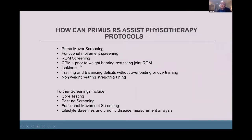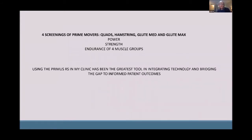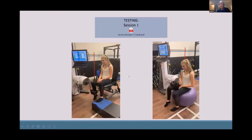I combined it with quantifying a core measure to motivate: core testing, postural assessment, functional movement, skip screening, and looking at lifestyle baselines and disease management — all integrated into one package in my assessment. Many physios said 'I just want the quad-hamstring ratios measured,' but I often found that a knee injury or adductor strain always came down to what the quads and pelvis are doing. So I always use it in a screening of what the prime movers are doing — the greatest tool for integrating technology and bridging the gap for patient outcomes.